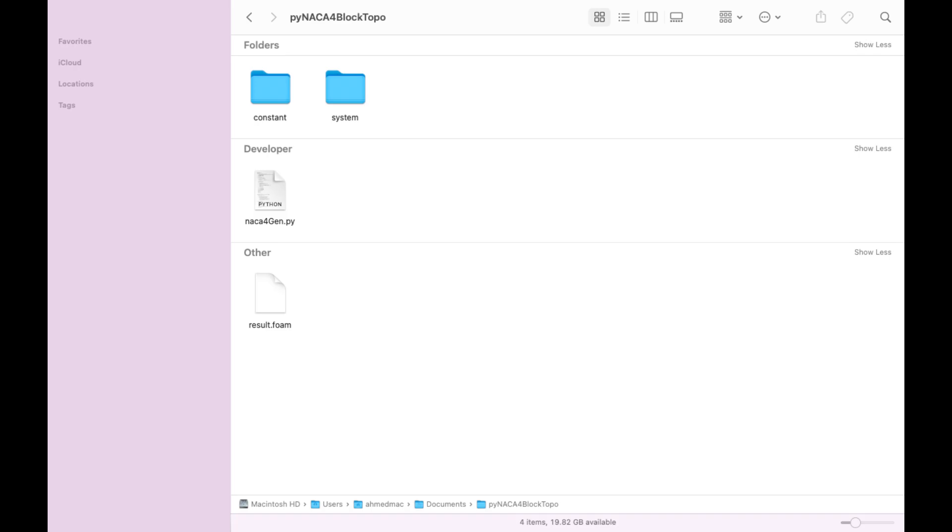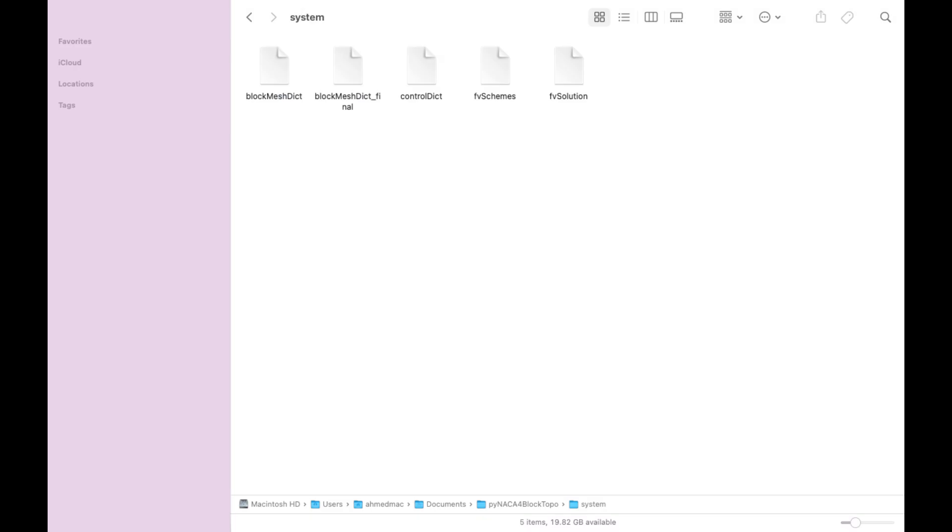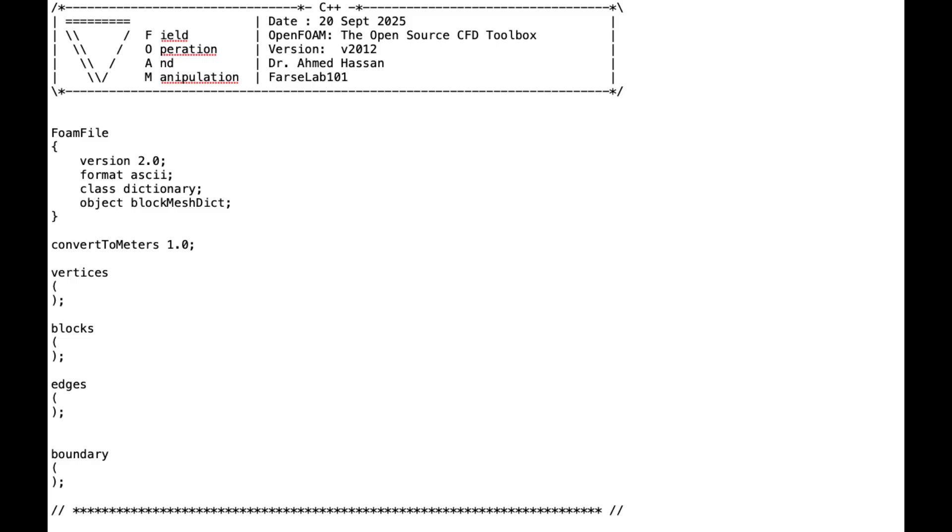Inside the system folder you will find two blockMeshDict files. One is empty with placeholder functions - we will create this together during this tutorial. The other is the model answer which has the word final in its file name. Open the blockMeshDict file. You will see empty sections for vertices, blocks, edges and boundaries. Let's learn how to fill each one step by step.